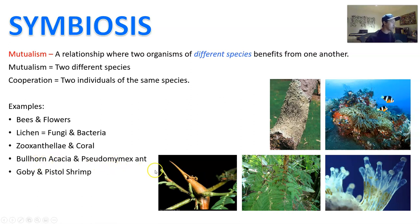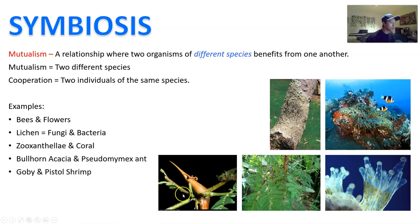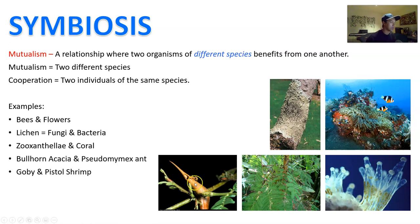Another example is the bullhorn acacia and the pseudomyrmex ant. The acacia plant has adaptations that allow ants to live inside its trunk and bark. The acacia also has seed pods that ants can take and creates nectaries that secrete nectar for the ants to live off. In return, the ants provide protection for the plant against other insects — chasing off insects that try to eat the leaves and acting as protectors in the relationship.